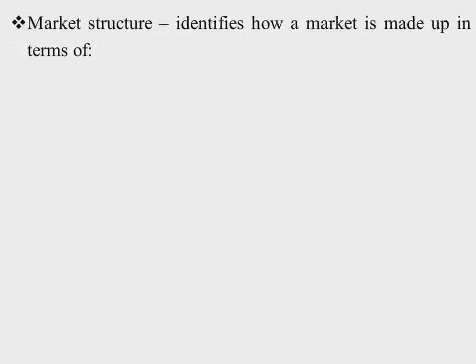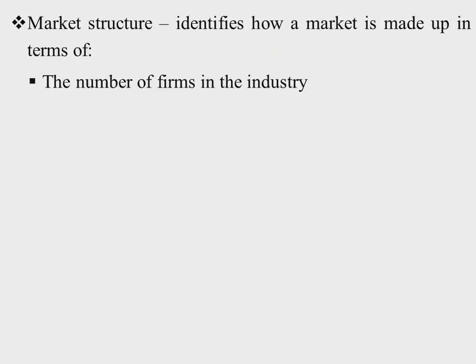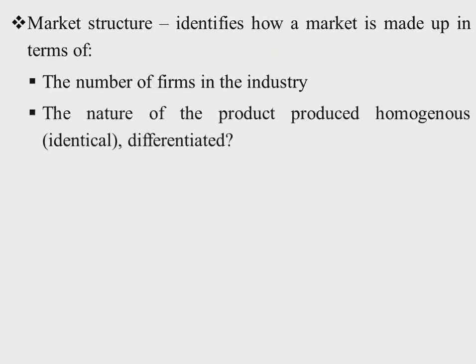So let's quickly look at what determines the industry where the firm will belong. When we are looking at market structures, these identify how a market is made up. Number one is in terms of the number of firms in the industry. For example, if we have a lot of firms in a given industry selling a homogeneous product, then we are in a perfectly competitive industry. And if there is only one firm, then we are in a monopoly.